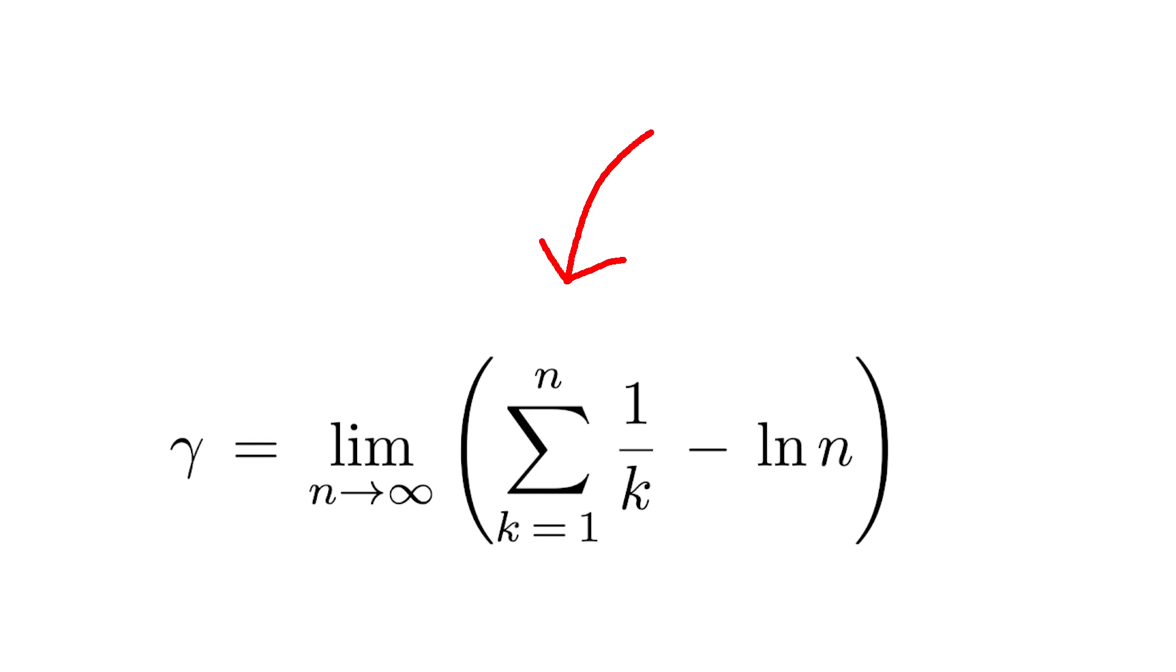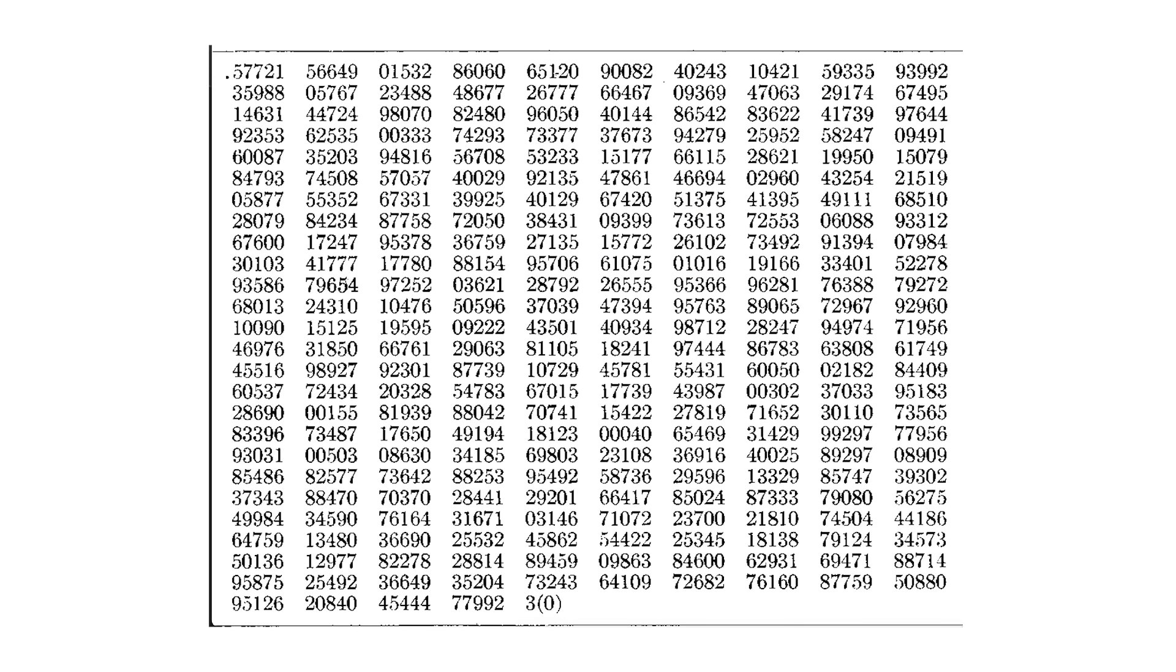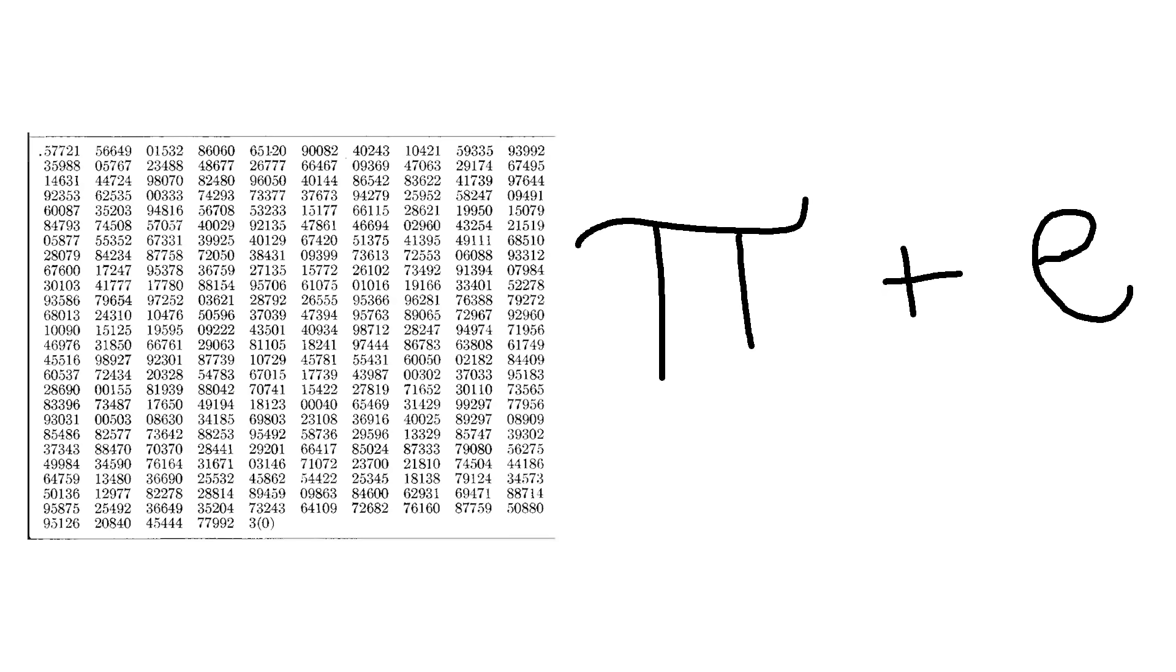But somehow, we don't even know if gamma is rational. People have calculated it to half a trillion digits, yet nobody can prove if it's rational or not. The popular prediction is that gamma is irrational. Along with our previous example pi plus e, we have another question of a simple property for a well-known number, and we can't even answer it.